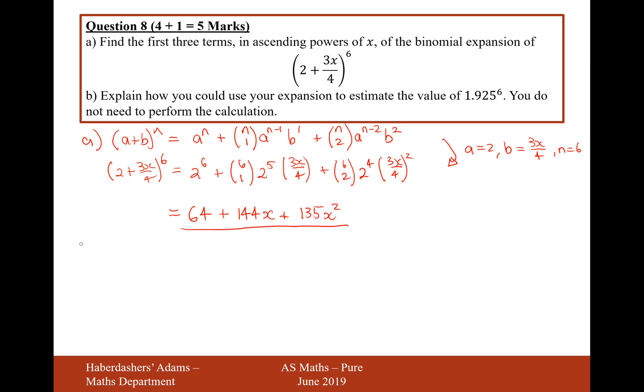Lovely. There we are. Well, those are the first three terms of this binomial expansion. And part B is to explain how you could use your answer to estimate the value of 1.925 to the power of 6. You do not need to perform this calculation.